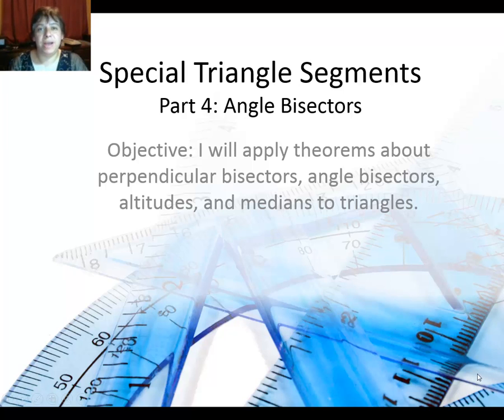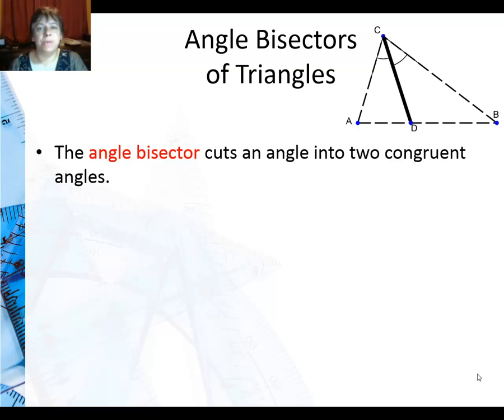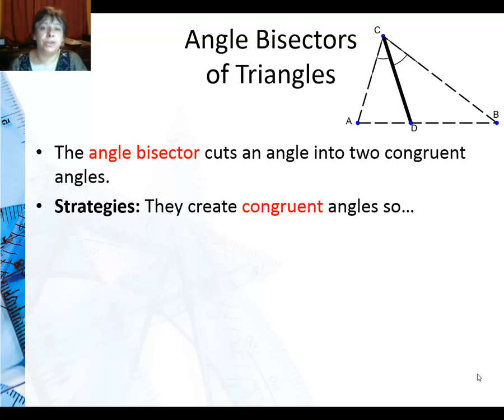Now for the last of the special triangle segments, the angle bisectors. We've already been working with angle bisectors before, now we're just dealing with an angle bisector of a triangle. It still cuts an angle into two congruent angles, so that hasn't changed.